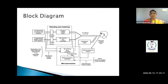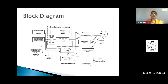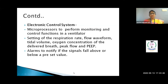Everything in a modern ventilator is microprocessor-controlled. In the block diagram: air and oxygen enter, get blended, and go to the patient; on exhalation, gas exits through the exhalation valve. The electronic control system features touch controls for setting alarms, respiration rate, waveforms, tidal volume, and FiO2. Alarms trigger if any value exceeds or falls below the set thresholds.